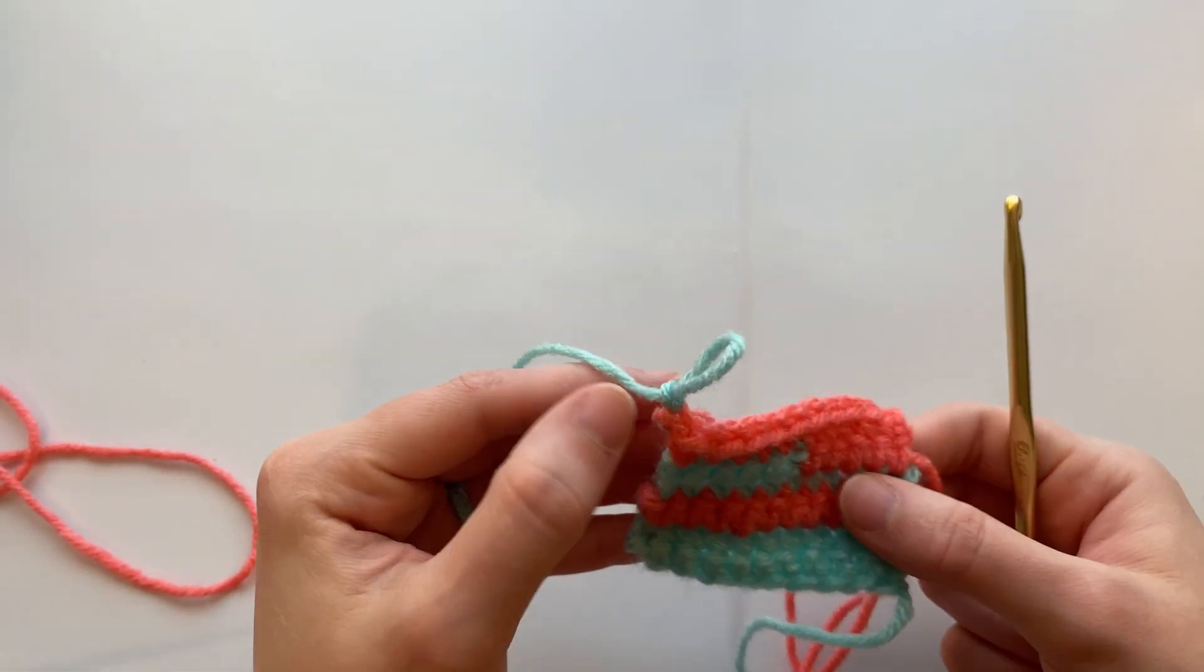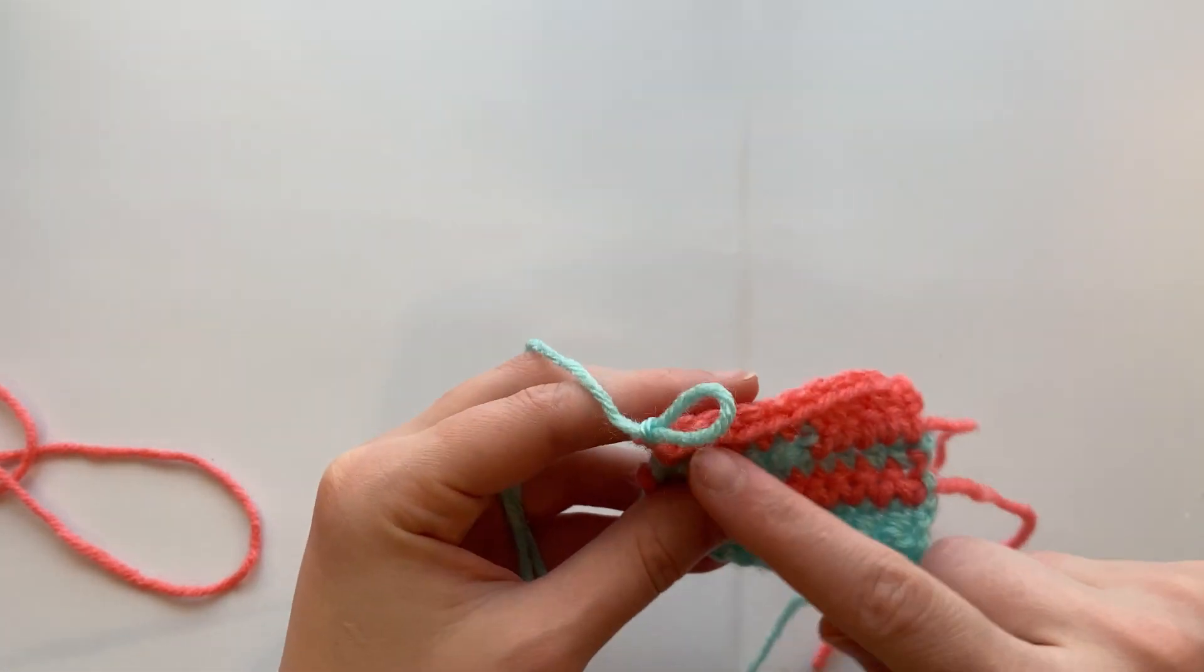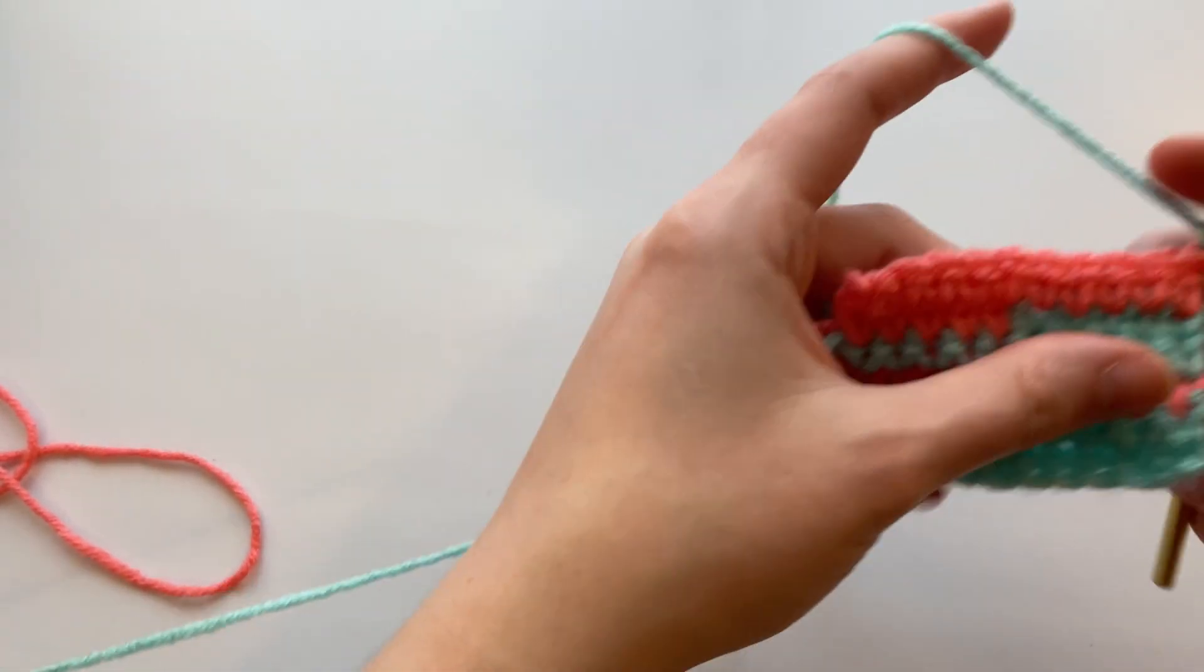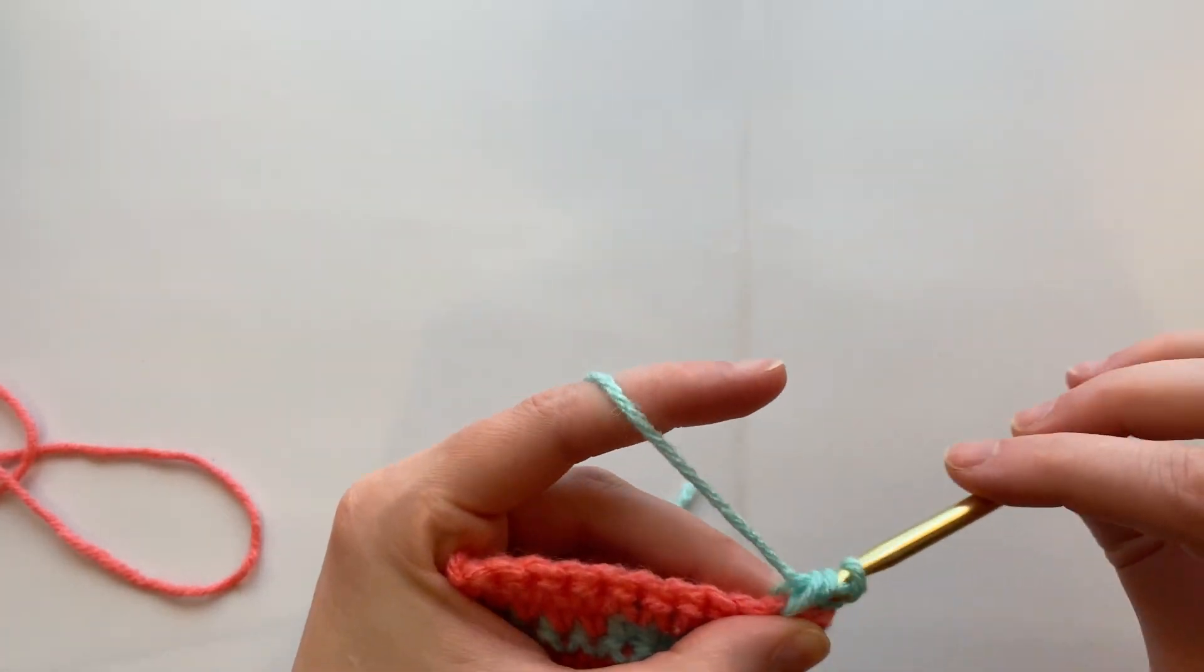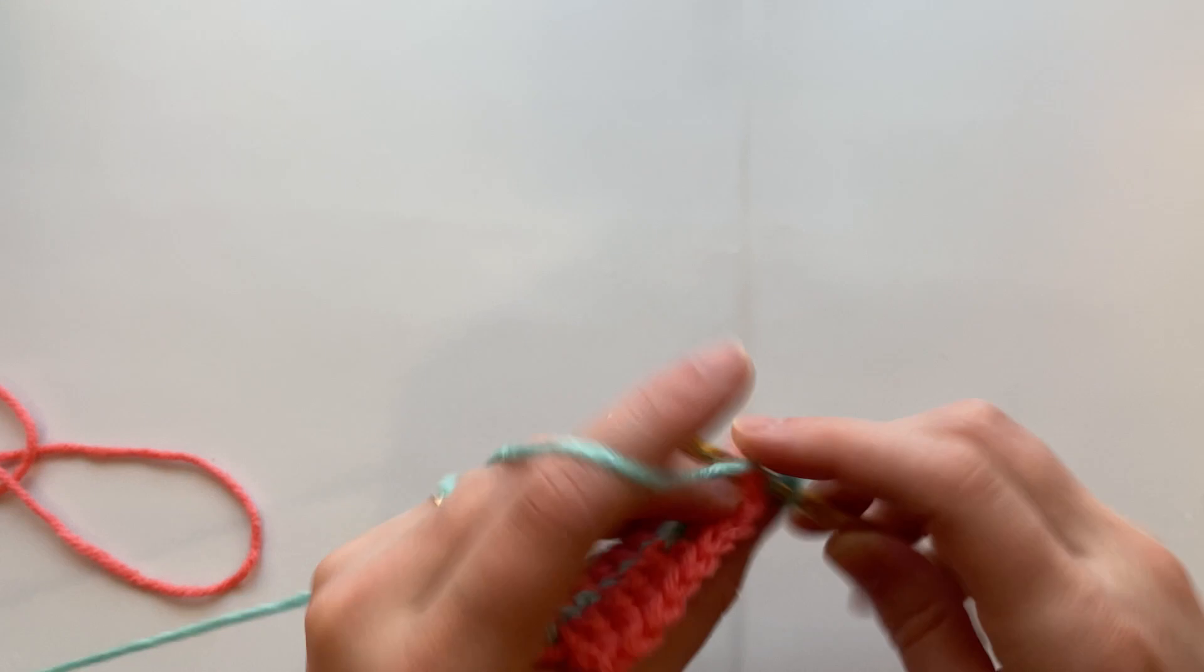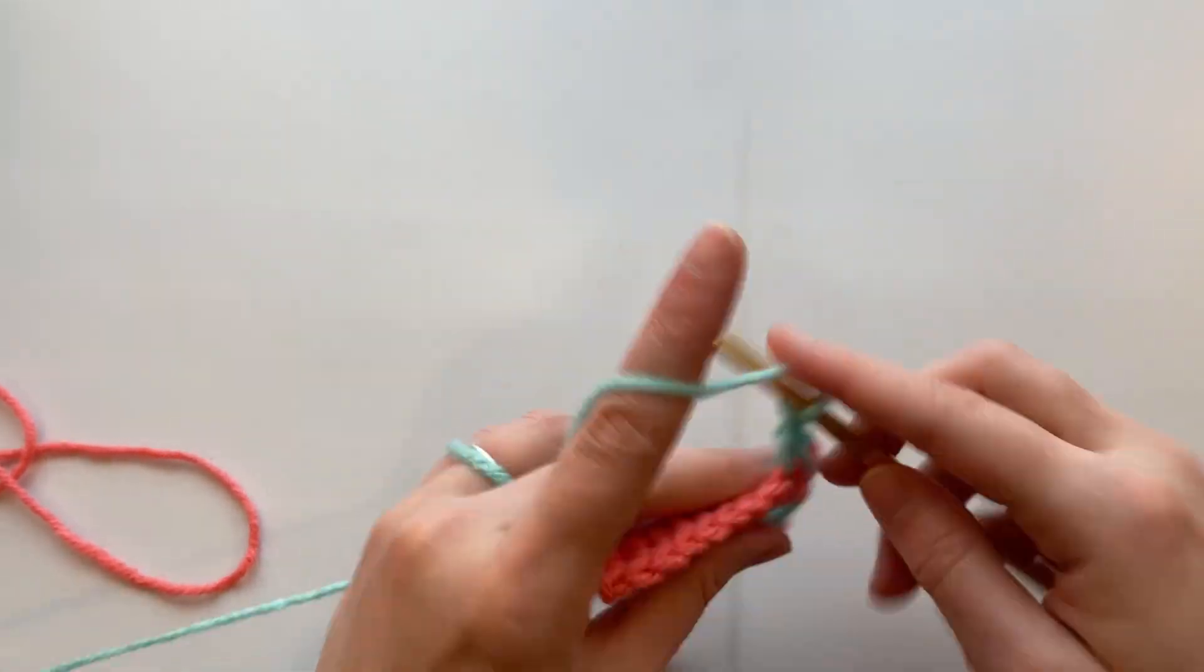Okay, so we ended up with just the one chain, which you could then just go back and loosen everything else up. It's not that big of a deal, and then you can go ahead and continue double crocheting.